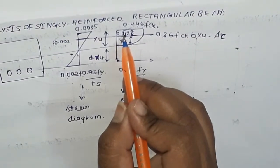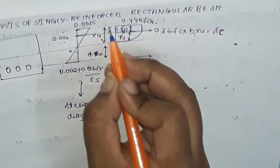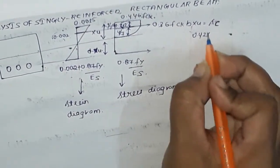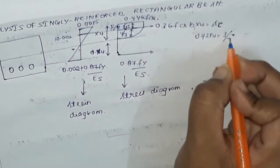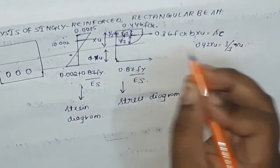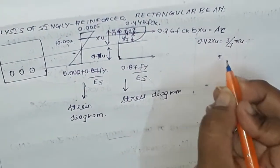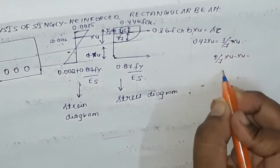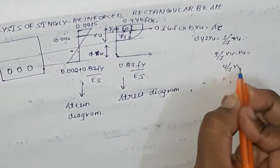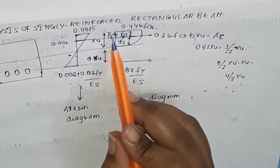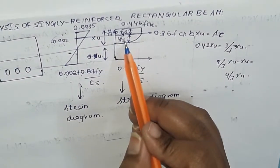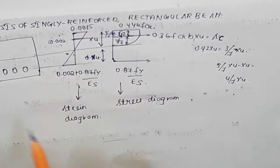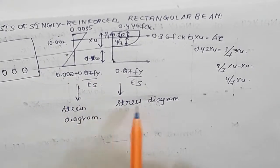Since 0.42 is nearly equal to 3/7, we have 0.42 XU equal to 3/7 XU. The remaining part is therefore XU minus 3/7 XU, which equals 4/7 XU. In this way we obtain the values of 3/7 XU and 4/7 XU. This entire diagram defines the stress-strain values for concrete and steel.